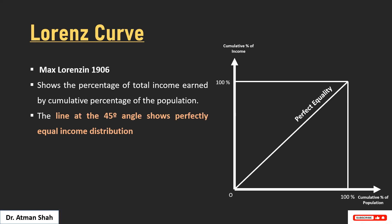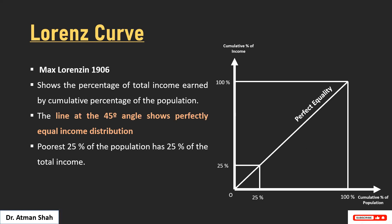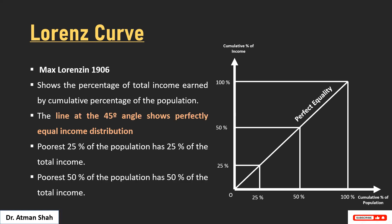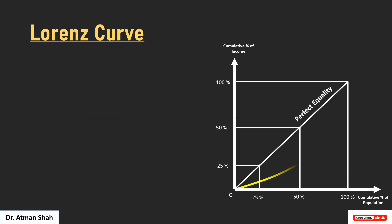The line at the 45-degree angle shows perfect equal income distribution. So the poorest 25% of the population has 25% of the total income, or the poorest 50% of the population has 50% of the income. That is why the diagonal line, or 45-degree angle line, shows perfect equal income distribution in the economy.